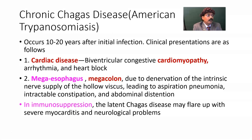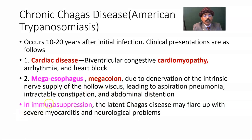These nerve supplies are mostly parasympathetic and derive from the neural crest cells. They control peristalsis of the hollow viscera like the esophagus and colon, leading to aspiration pneumonia, intractable constipation, and abdominal distension. Not only the esophagus and megacolon — it may also lead to mega ureter, where the ureter may be dilated. In immunosuppression, latent Chagas disease may flare up with severe myocarditis and neurological problems.